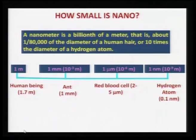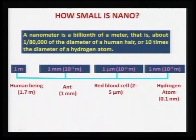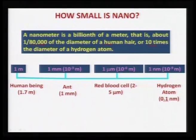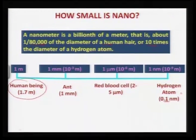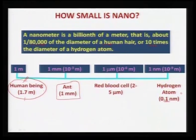Coming back to how small nano is: nano refers to any entity less than around 100 nanometers. To visualize it physically, a nanometer is one billionth of a meter — about 1/80,000th of the diameter of a human hair. Human hair is approximately 100 to 150 micrometers in diameter, and a nanometer is approximately 10 times the diameter of a hydrogen atom. A human being is around 1.7 meters, an ant is approximately 1 to 3 millimeters in length.